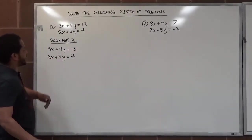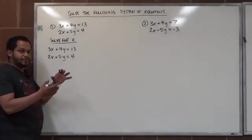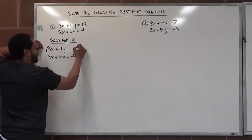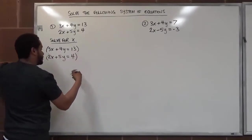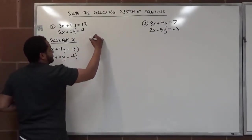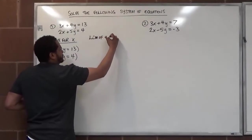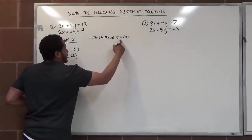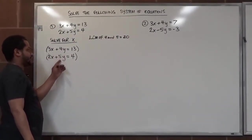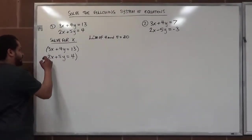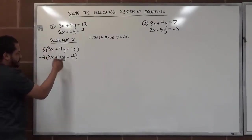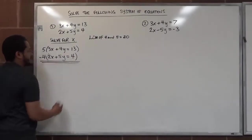To cancel y, I have to make these values opposite but equal. Since 13 is larger up top, I'll multiply by a positive on top and a negative on the bottom so my solution remains positive. The LCM of 4 and 5 is 20 — that's the first number they both make. So I'll multiply the top line by 5 and the bottom line by negative 4, giving me negative 20 on the bottom.